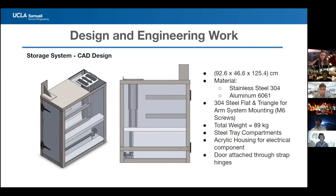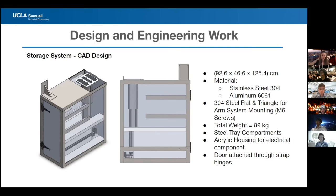The storage cart will be 93 by 46 by 125 centimeters in dimension (length, width, height). Materials consist mainly of stainless steel 304 alloy for the top and bottom platforms and supporting beams. Walls and doors will be made of aluminum 6061 to support the robot arm assembly. M6 screws supported by 304 steel flats and triangles will attach the arm assembly. Total weight is approximately 90 kilograms. Tray compartments will be 304 steel; acrylic housing will protect electrical components from water damage; and an aluminum door attached to strap hinges will be at the front of the cart.